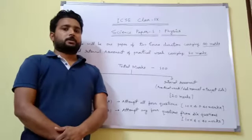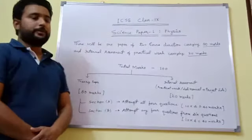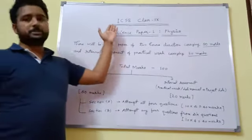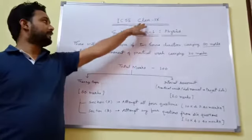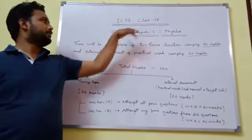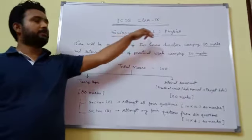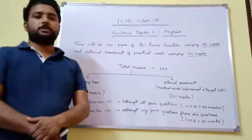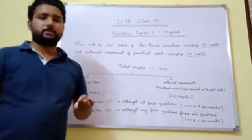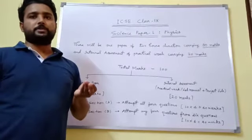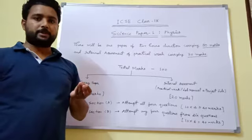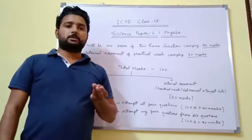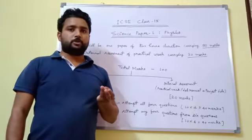Hello students, today we will discuss about the examination pattern of ICSC class 9 science. Basically there are 3 papers: science paper first is physics, science paper second is chemistry, and science paper third is biology.